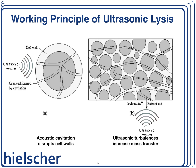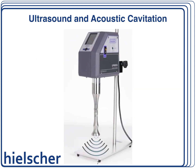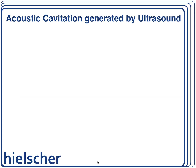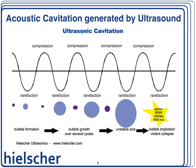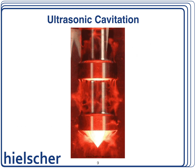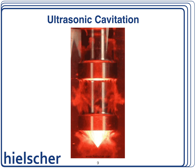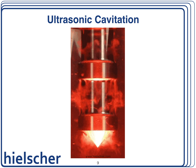Now let's dive into how a sonicator operates. Imagine a sonicator as a transmitter of ultrasound waves. It sends these waves through a probe or sonotrode into a liquid. These waves create alternating high and low pressures, making small bubbles in the liquid. These bubbles grow and collapse, a process called acoustic or ultrasonic cavitation. This collapse generates energy shock waves, microjets, temperature differentials, and pressure shifts in the liquid.